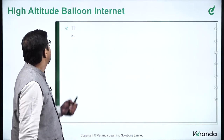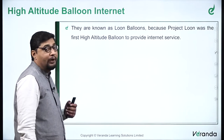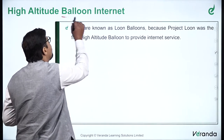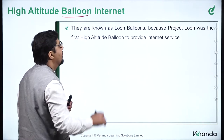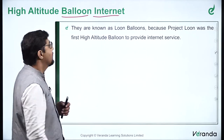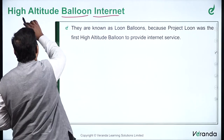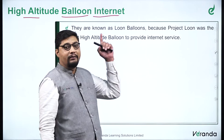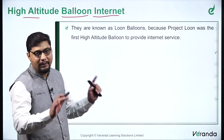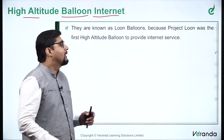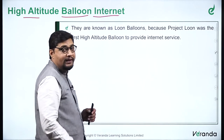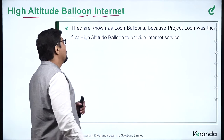So let's start by understanding what is high altitude balloon internet. As the name suggests, there will be a balloon that provides internet, and by the name 'high altitude', that means they are at a very high distance from the earth. Let's see the technical details about this particular project.